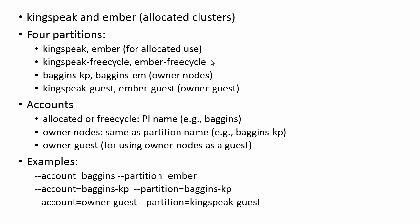If you run out of allocation or don't have any allocation, then instead you use the FreeCycle partition, which is Kingspeak FreeCycle or Ember FreeCycle. Some groups also have private nodes which are reserved for their exclusive use. To access those, you use the group name — in our example, Baggins — followed by dash-KP or dash-EM depending on Kingspeak or Ember. As a user, you also have access to the owner-guest partition, Kingspeak Guest and Ember Guest, which allows you to run on owner nodes in a guest fashion where your jobs are preemptible.